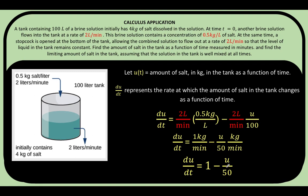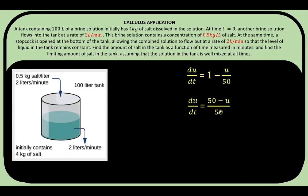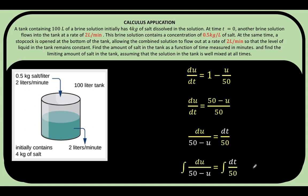So our equation is: du/dt = 1 - u/50. Writing this as one fraction with LCD of 50, we arrive at du/dt = (50 - u)/50. This is a first-order differential equation, and in order to solve it we are going to use the technique of separation of variables. We treat du/dt as a fraction and multiply both sides by dt/(50 - u), separating the variables, then take the antiderivative of both sides.